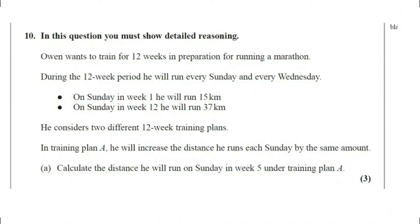Question number 10. Owen wants to train for 12 weeks in preparation for running a marathon. During the 12-week period he will run every Sunday and every Wednesday. On Sunday in week 1 he will run 15 km, and on Sunday in week 12 he will run 37 km. He considers two different 12-week training plans.